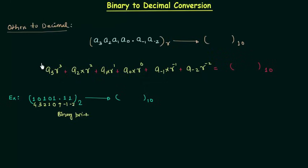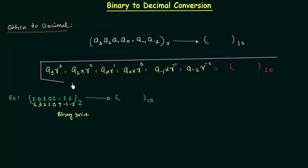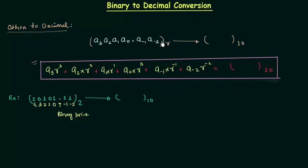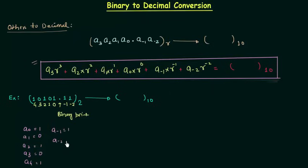Now we will follow this rule — we have to follow this rule every time when we have to convert any number to decimal. Comparing with the general form: a0 is equal to 1, a1 is equal to 0, a2 is equal to 1, a3 is equal to 0, and a4 is equal to 1. In the same way a-1 is equal to 1 and a-2 is equal to 1, and the base r is equal to 2.